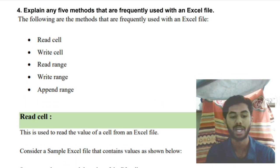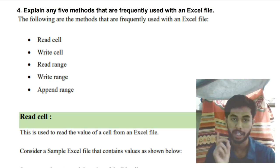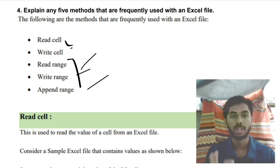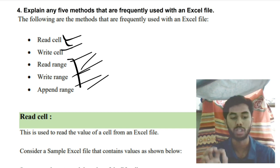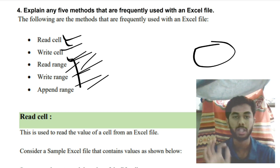Moving on to the fourth super important question: what are the five methods frequently used with an Excel file? Excel is used for reading and writing, but we also have append. So we will have: Read Cell, Write Cell, Read Range, Write Range, and Append Range. Read Cell reads data from one cell, Write Cell writes data to one cell, and Read Range and Write Range work on a range — reading or writing a particular set of data.